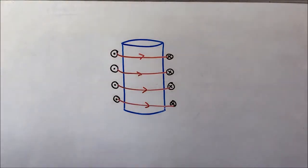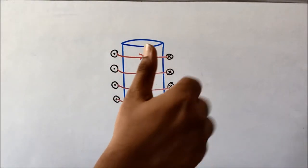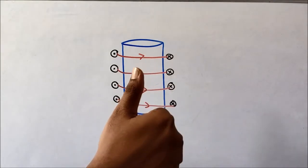You must know Maxwell's right hand thumb rule. What does Maxwell's right hand thumb rule say? If the thumb represents the direction of current, then the circled fingers represent the direction of magnetic field.